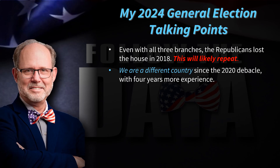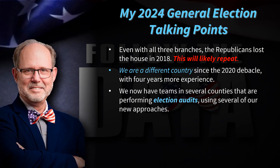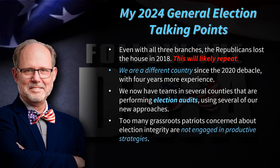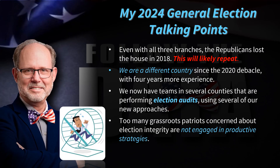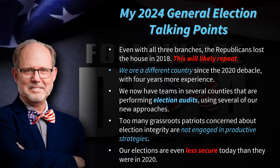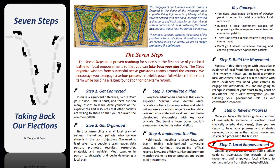We are a different country today than we were four years ago, following the 2020 election debacle with four years more experience. We have teams in several counties across the nation that are now performing election audits using several of our new approaches. Too many grassroots patriots concerned about election integrity are not engaged in productive strategies — I call these hamster wheels: lots of effort, but little movement forward, exhausting our grassroots volunteers and wasting our limited time, energy, and resources. Our elections are even less secure today than they were in 2020. The only solution is for we the people to wake up, to fulfill our sovereign duty, and to reclaim our primary means of self-governing: our elections.